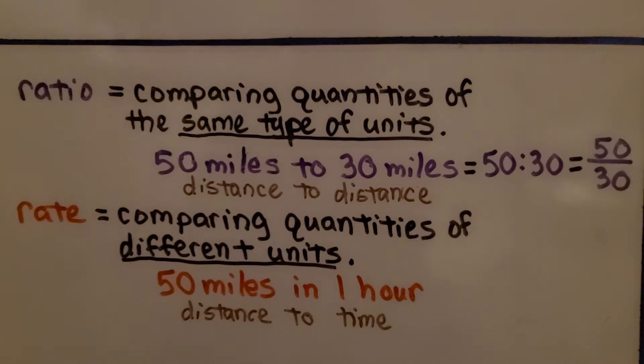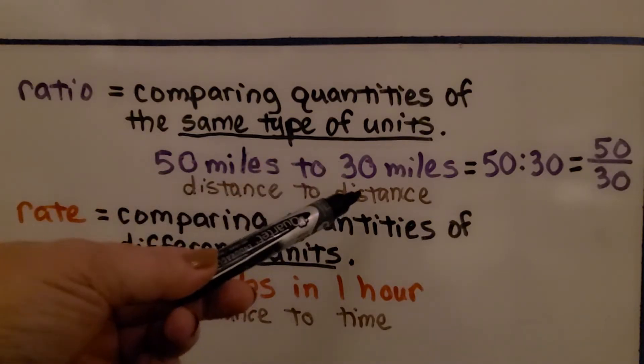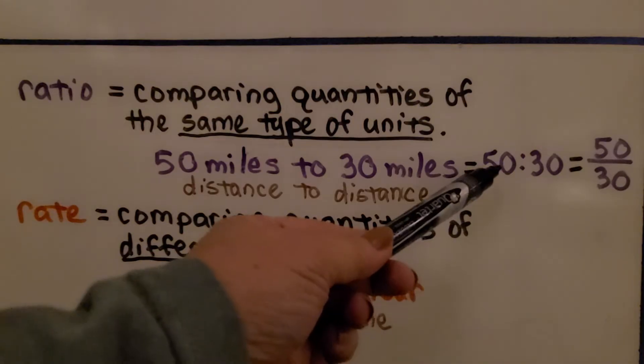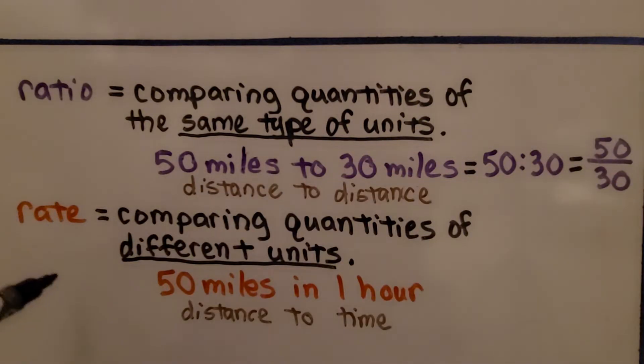So a ratio is comparing quantities of the same type of units like 50 miles to 30 miles. We're doing a distance to a distance. We could write it as 50 to 30 or 50 over 30. A rate is comparing quantities of different units, 50 miles in one hour. That's distance to time.